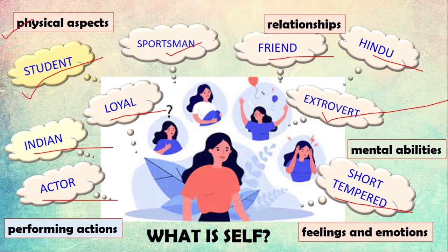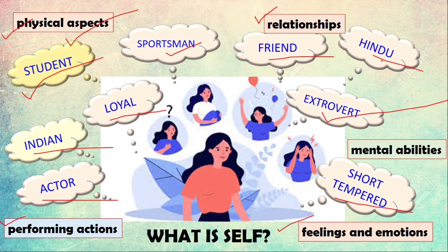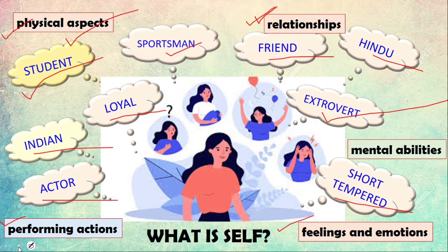These aspects are basically divided into: first, the physical aspects; then something about your relationships; feelings and emotions; and finally performing actions. Performing actions includes being a sportsman, an actor, a student, an athlete. Physical aspects include being tall, fair, or having long hair. When we talk of loyalty, being friendly, being an extrovert — this is about relationships and feelings and emotions. Being short-tempered, very emotional, fun-loving, a party animal, an early sleeper, loving your family, getting depressed easily — these are all your feelings and emotions. So, it is a complicated self.